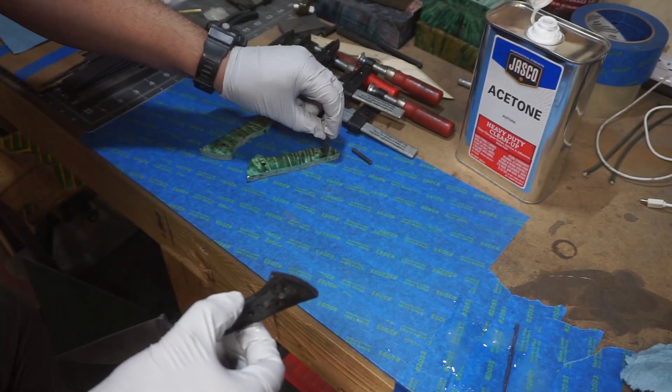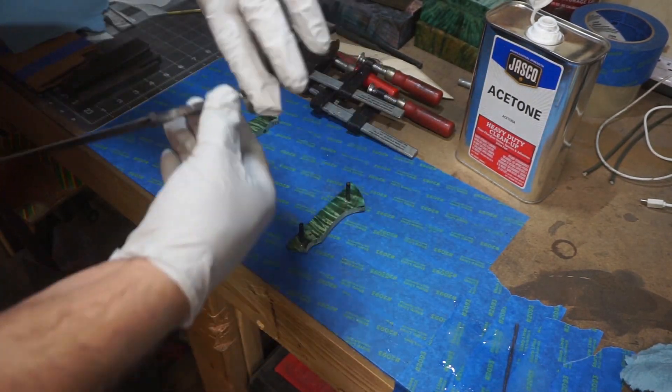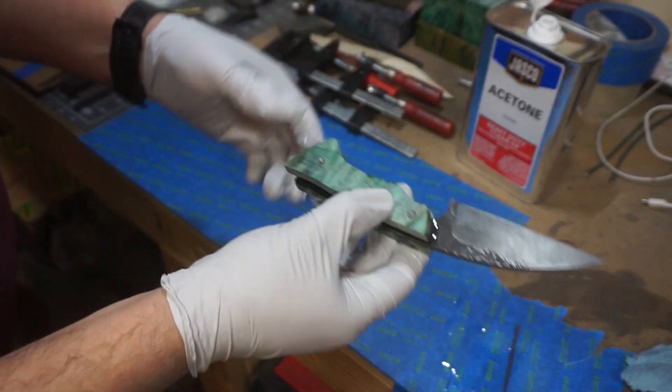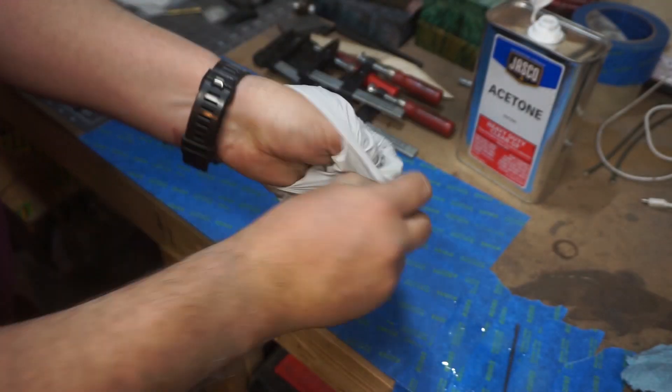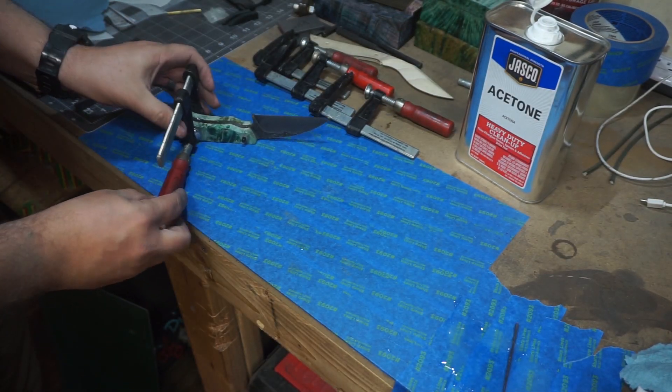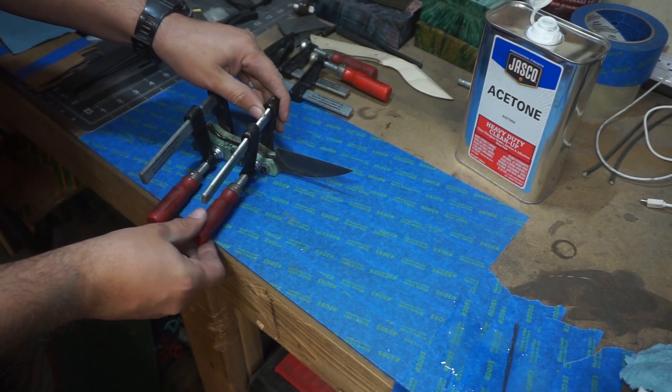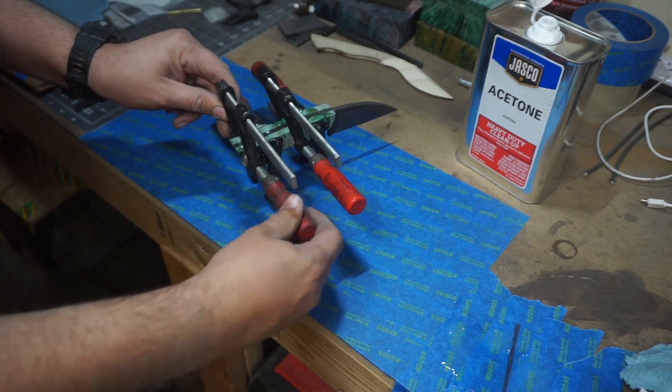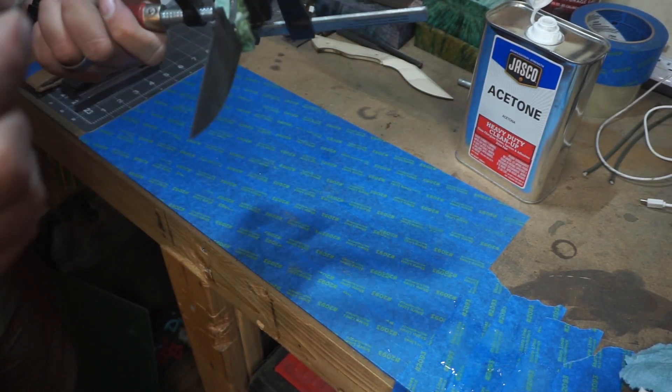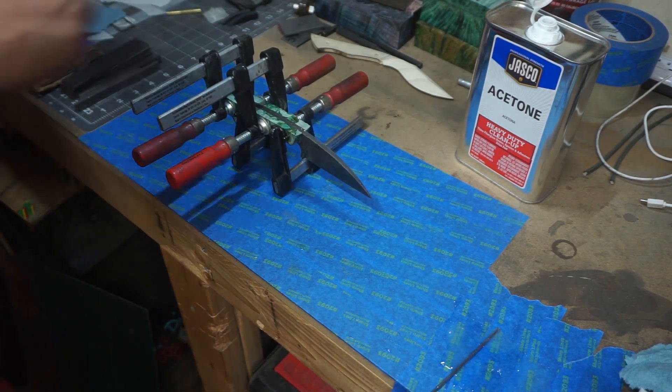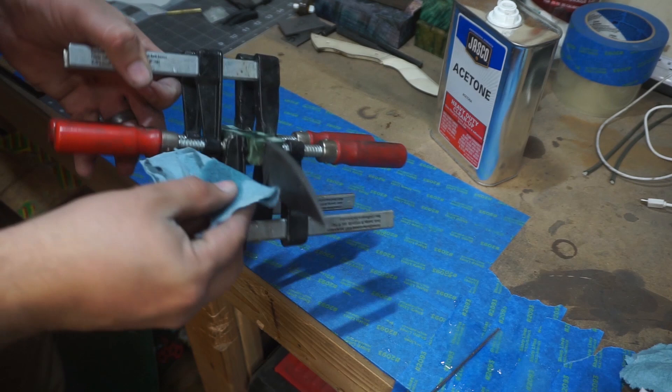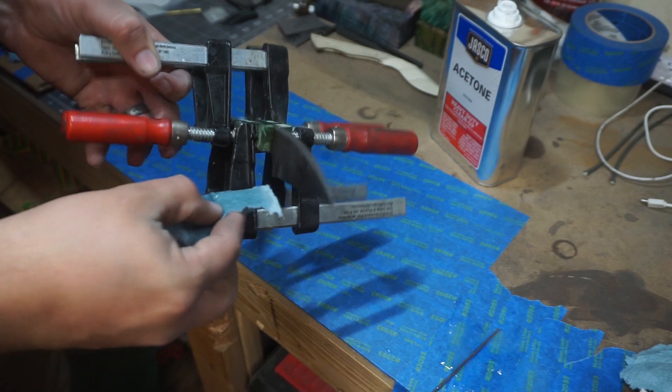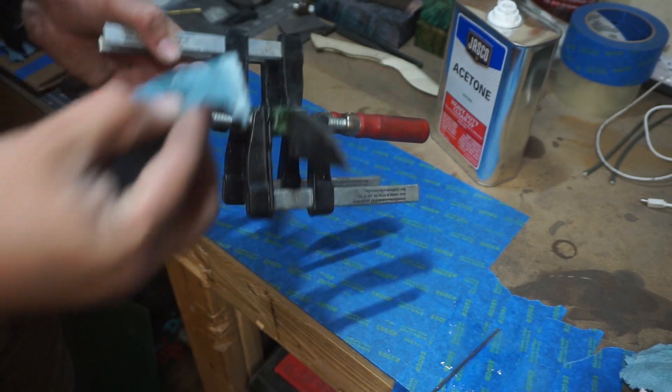I'm a big fan of putting the epoxy on everything before we actually go through and put everything together. It makes it a lot easier when it comes to spreading the epoxy. Now when it comes to the clamps, all you're doing is putting enough pressure on there to get a little bit of squeeze out. You're not trying to crank these down because you'll squeeze all the epoxy out and you will not have a good bond. Once we're done with that, we're going to use acetone and clean up the area where the scales meet the ricasso because you will not be able to mess with that later.